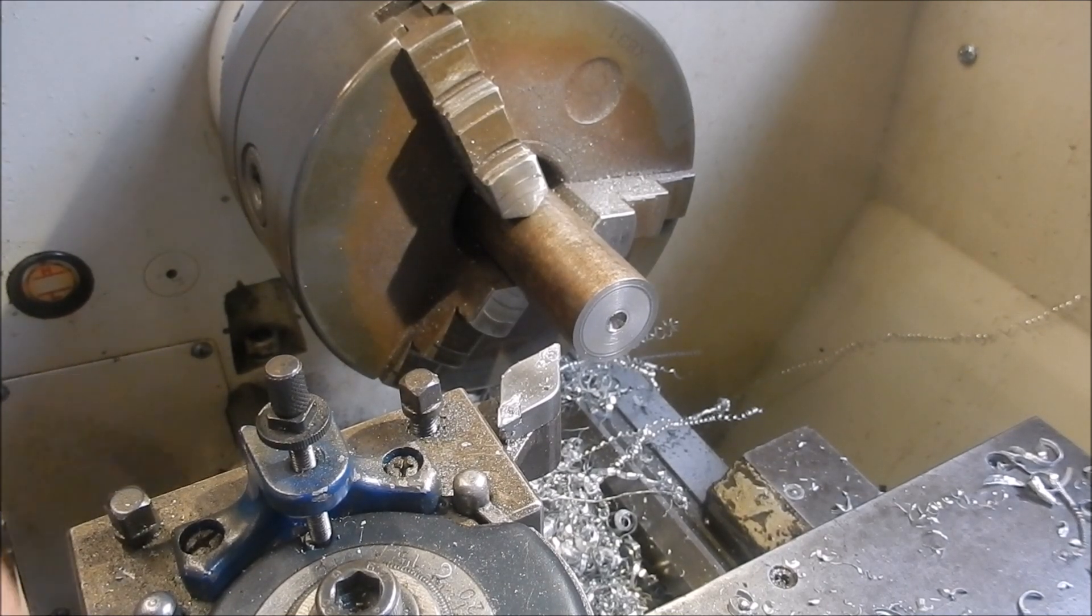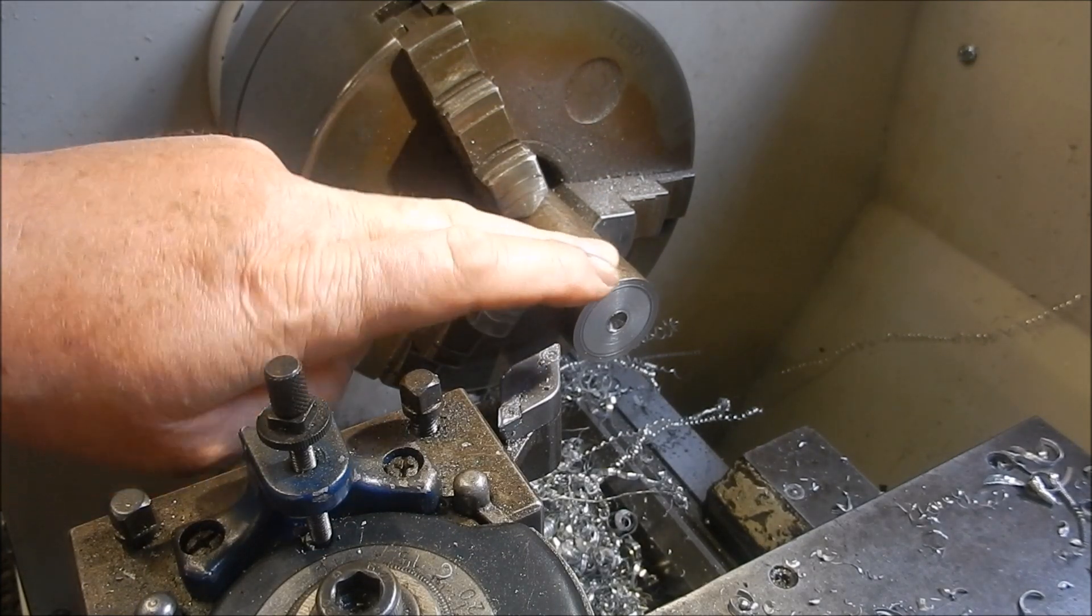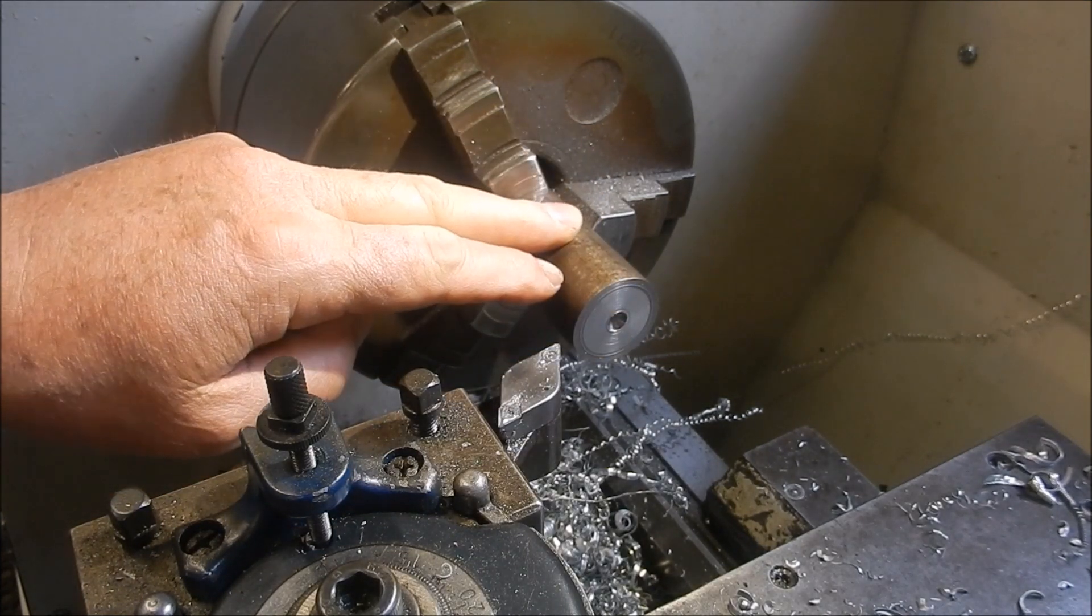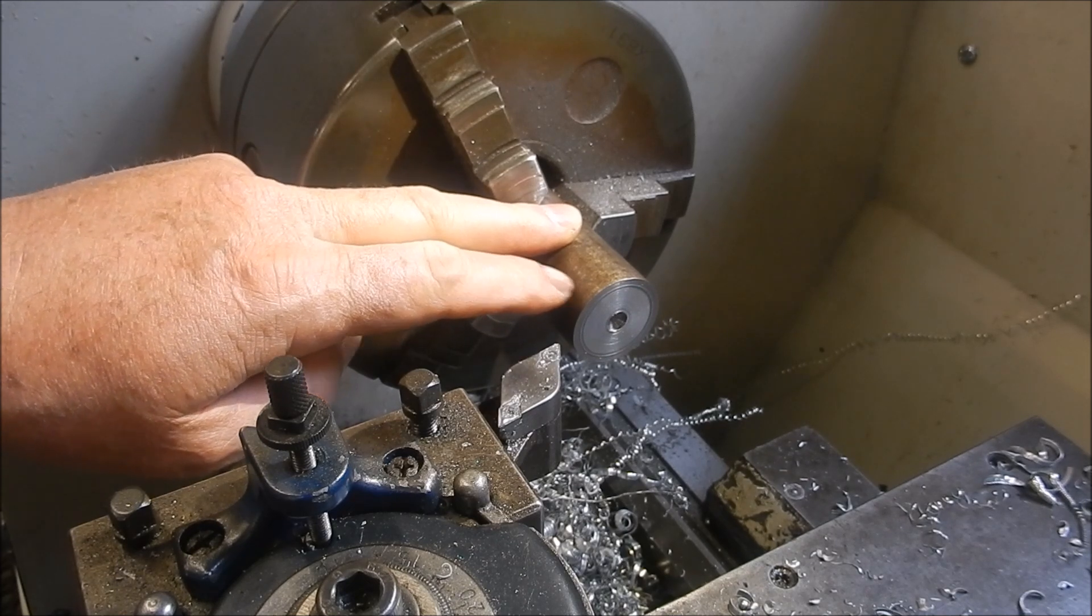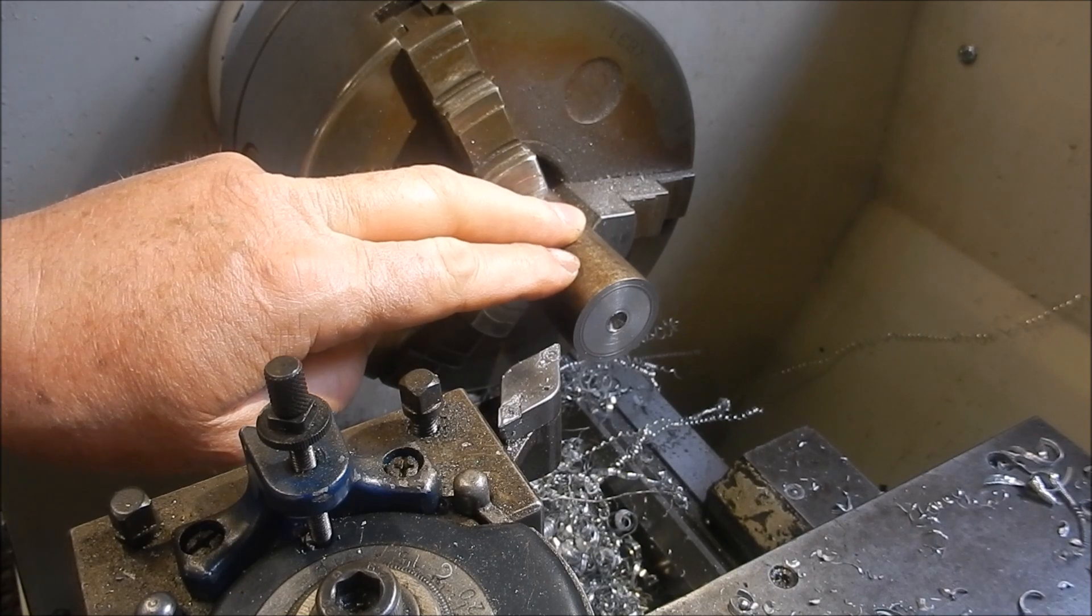Alright, we've just got some basic machining on this. We're going to use a bit of solid 30mm round bar. We're just going to clean up the OD, machine the end square, and we'll draw a tap in one end - M10 for one of the locking bolts.